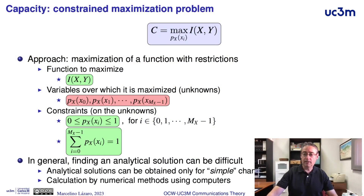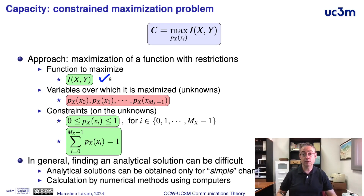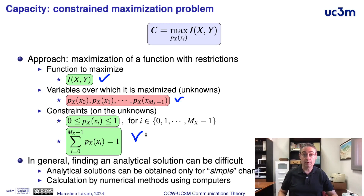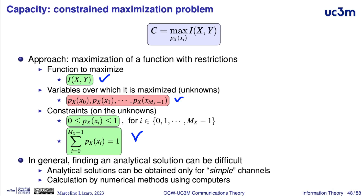In this video, we will see an example of the calculation of the channel capacity for a digital channel with binary input. In general, the channel capacity is a constrained maximization problem. It is necessary to maximize the mutual information between the input and the output of the system. The maximization is made over the input distribution, and the constraints are the constraints for the values of probabilities. In general, it can be difficult to find an analytical solution; these solutions can only be obtained for simple channels, for instance, for channels with a binary input.